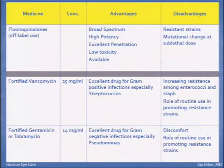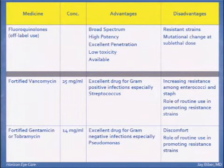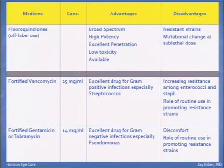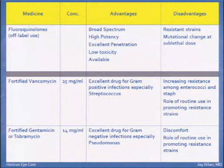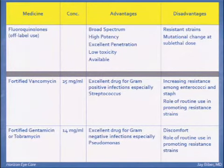The fluoroquinolones, as mentioned, are very broad spectrum. They penetrate very well, therefore they're very potent and low toxicity. They're easily available — most of us have these as samples, or they can be obtained at any pharmacy. For fortified antibiotics, I like vancomycin at 25 milligrams per milliliter and aminoglycosides at 14 milligrams per milliliter. These medicines can be toxic, so you have to watch the response, but in this day and age of resistance, they can be important.